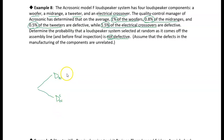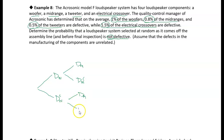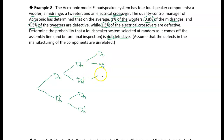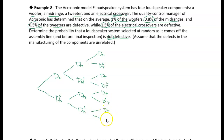Then we're going to select a mid-range — again two possible outcomes, defective or not defective, using D sub M for defective mid-range. Then we have to select a tweeter, which is either going to be defective or not defective, giving us defective tweeter or not defective tweeter on each branch.